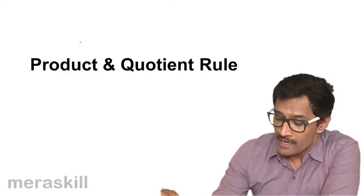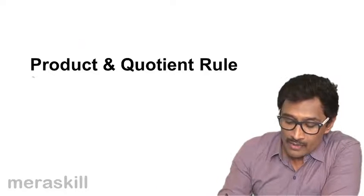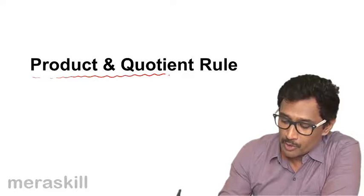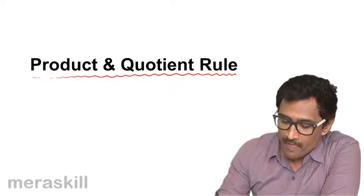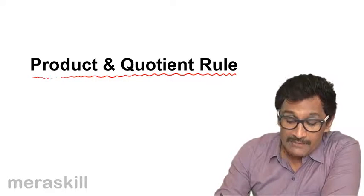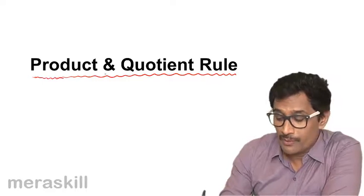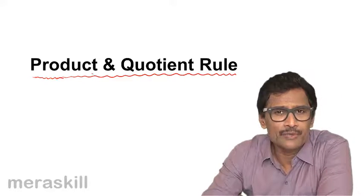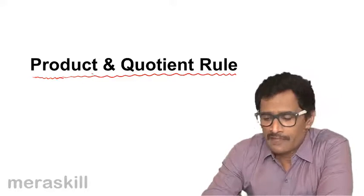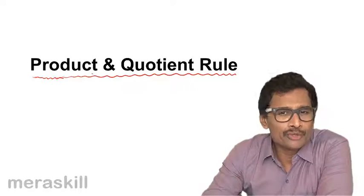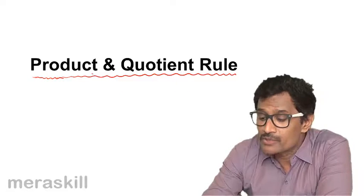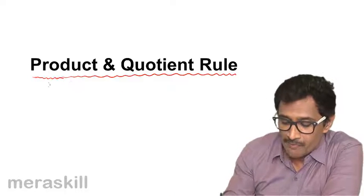We are now going to use a very important rule: the product and quotient rule. I've mentioned this earlier and we have used this rule in earlier examples too, but we'll formally use it and take up some examples which exclusively use these particular rules.